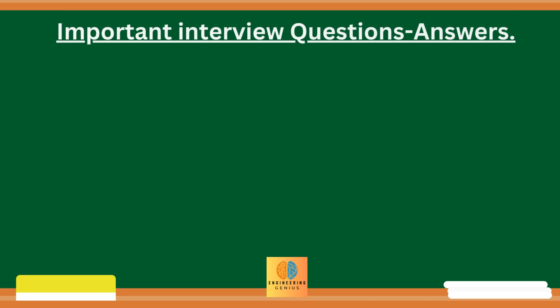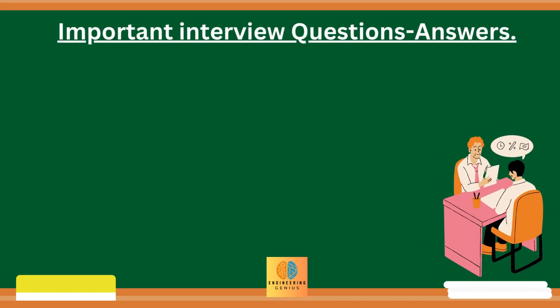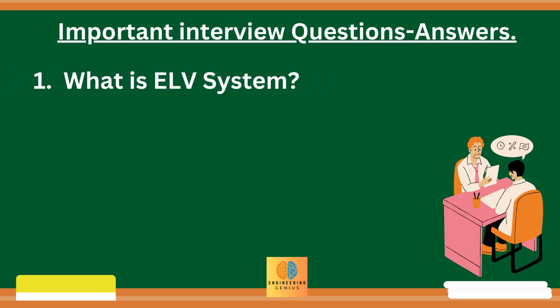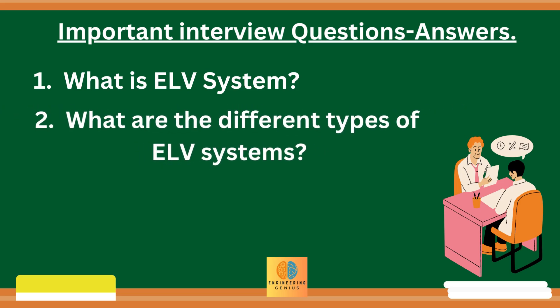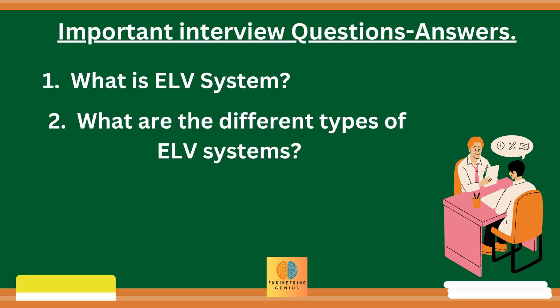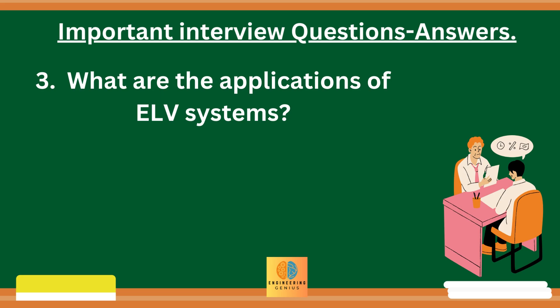Now the last part of this video covers interview questions and answers for ELV systems. The first common question is what is ELV system, which was already explained. Another question is what are the different types of ELV systems, also covered. The next question is what are the applications of ELV systems — the answer is: physical security in defense, smart cities, company and plant premises, fire alarm systems, building automation systems, communication systems and building management systems.